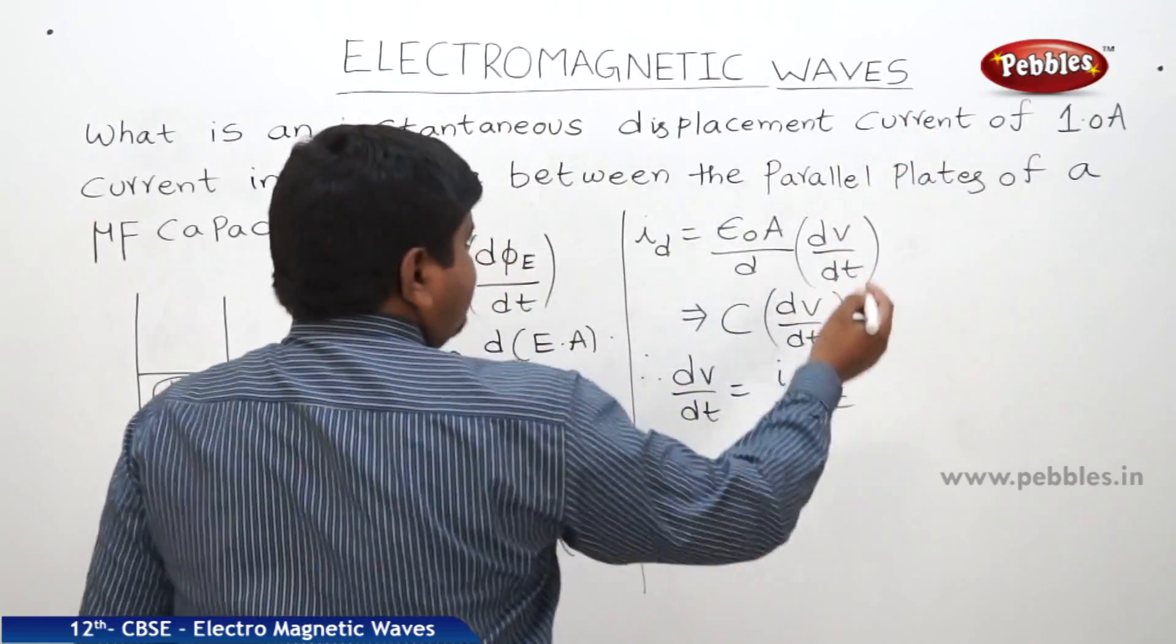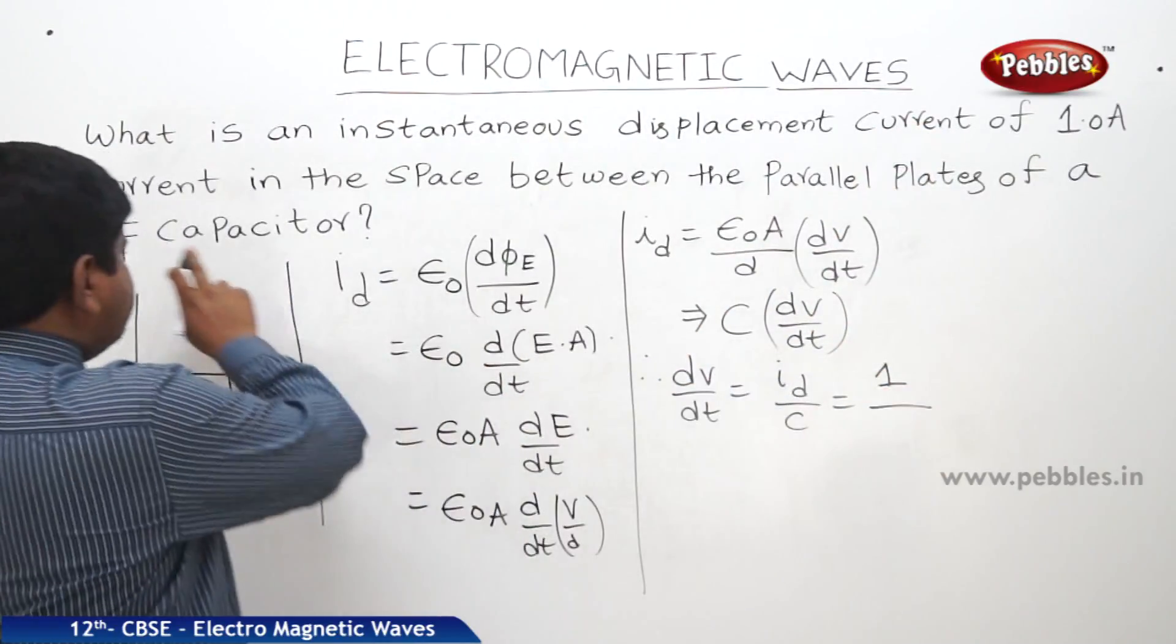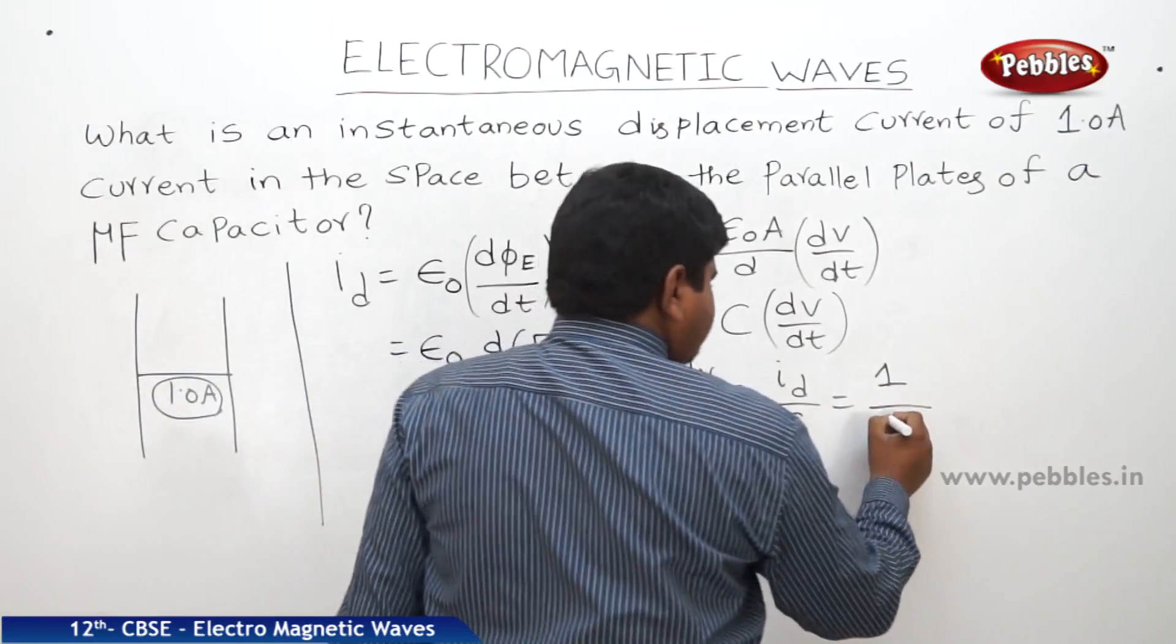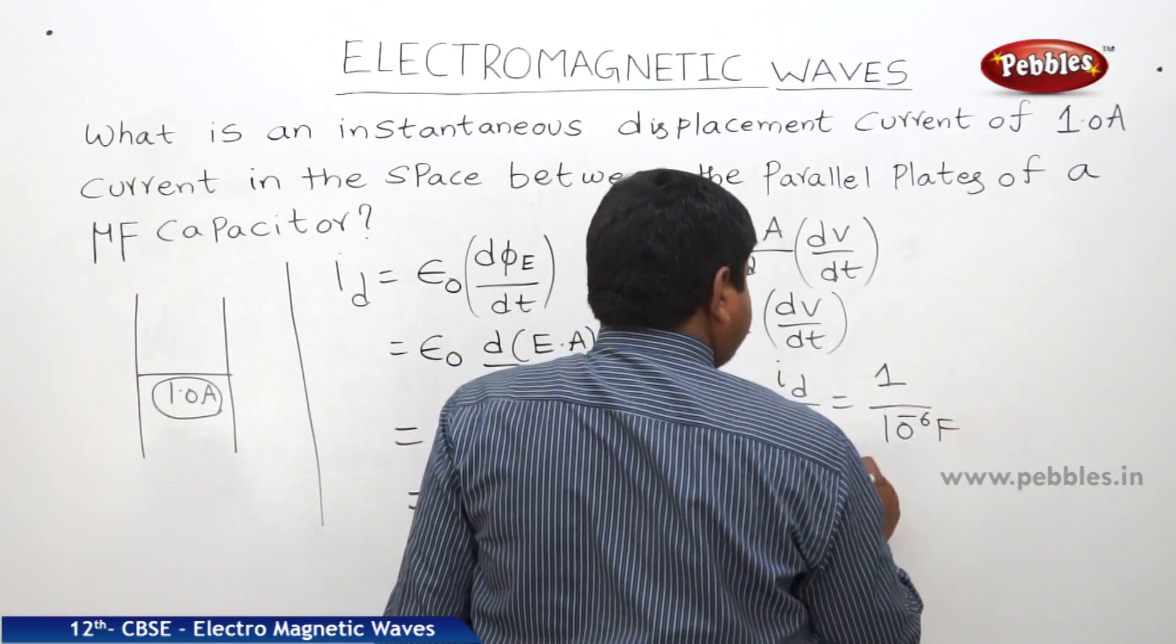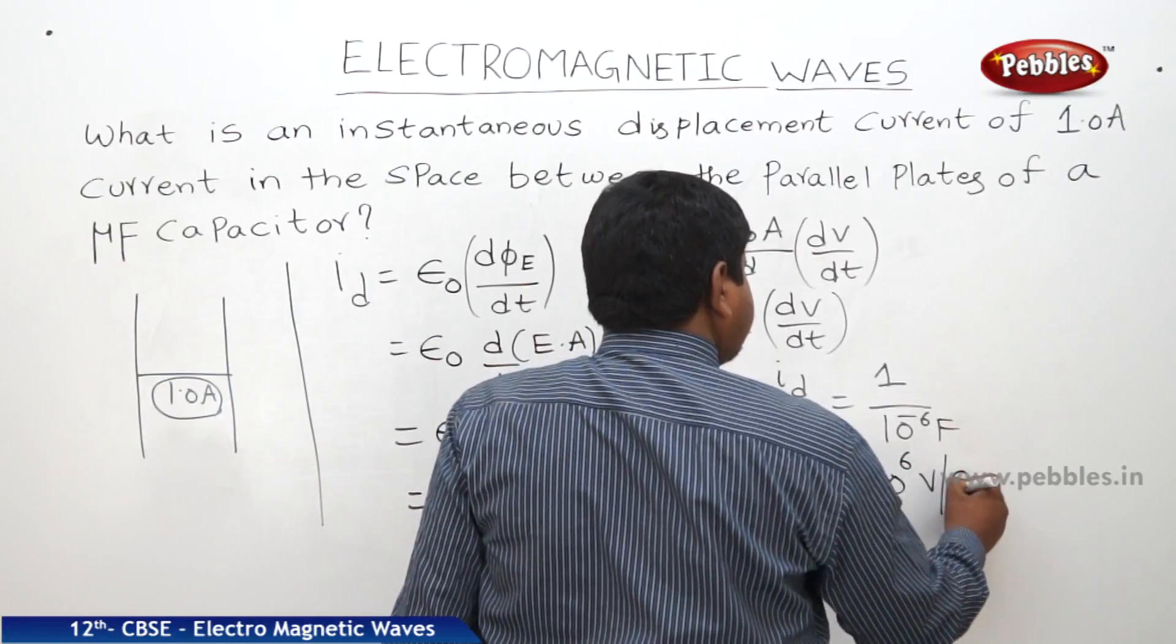What is the displacement current? 1A. What is the capacitance? 1 microfarad. That means 10 power minus 6F. So it will be 10 power 6 volts per second.